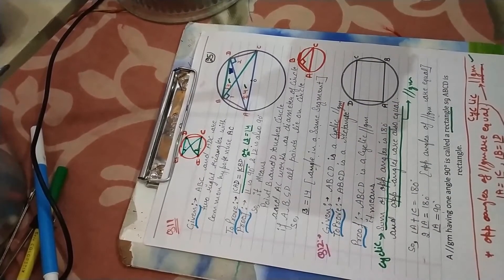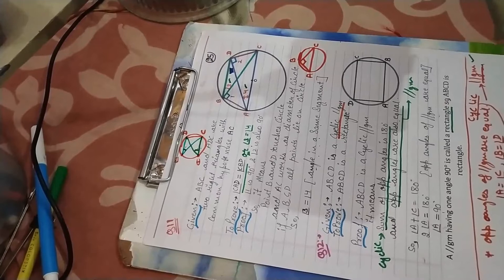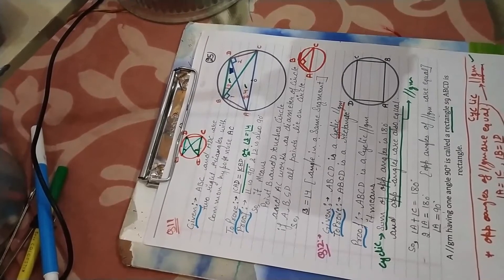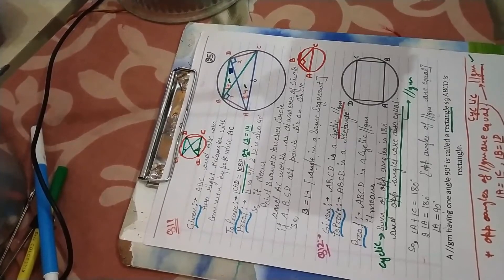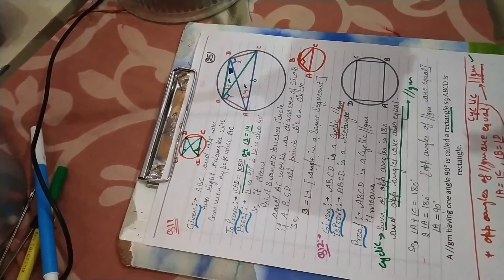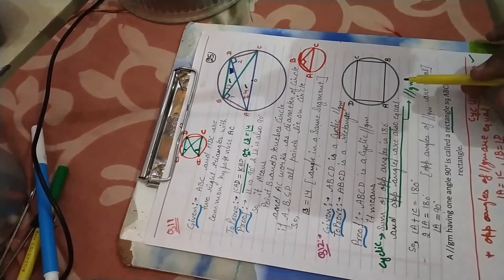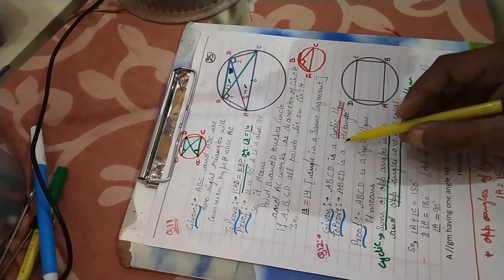There are two ways to prove it. We can make all angles 90 degrees, or use the fact that a parallelogram having one angle of 90 degrees is called a rectangle. Now, it is given that it is a cyclic parallelogram.